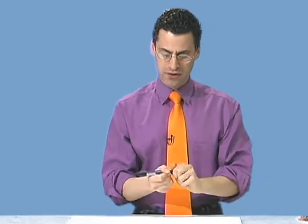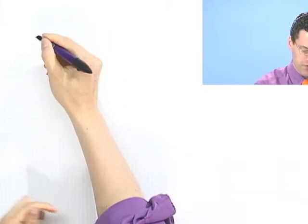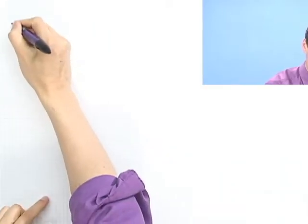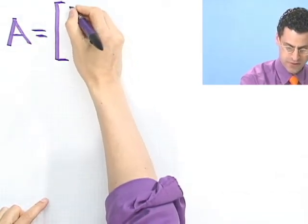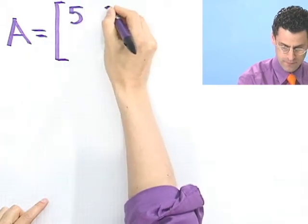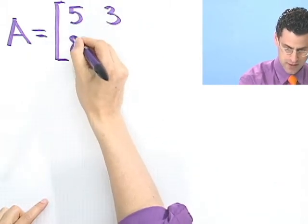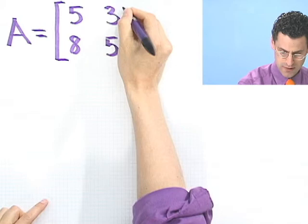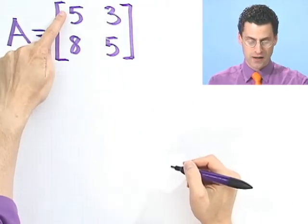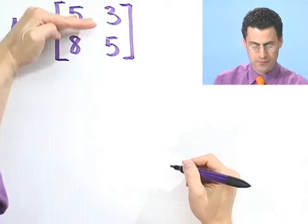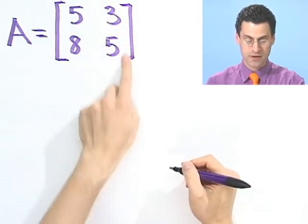Let's start with just two by two matrices. So suppose I have a matrix A, and it equals, it's going to be two by two: 5, 3, 8, 5. Notice that's a square matrix because I have two rows and two columns.